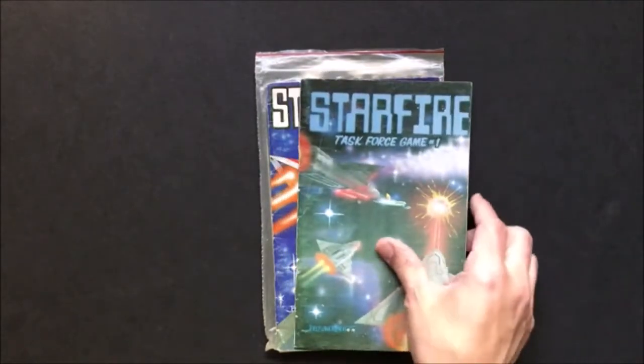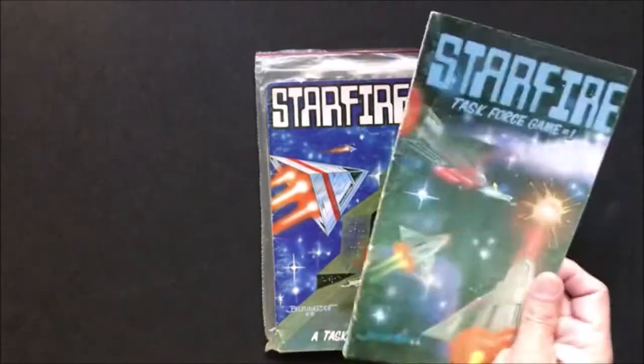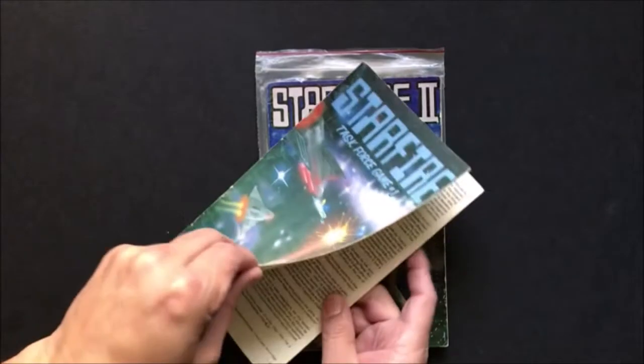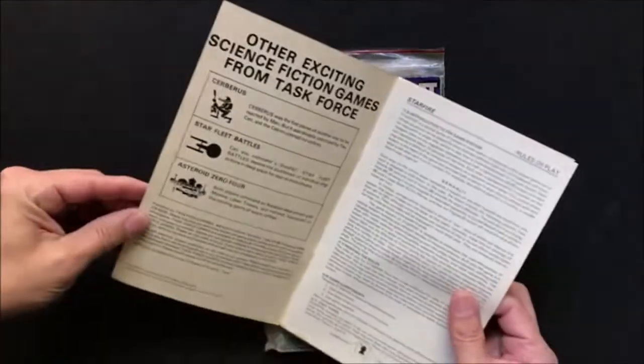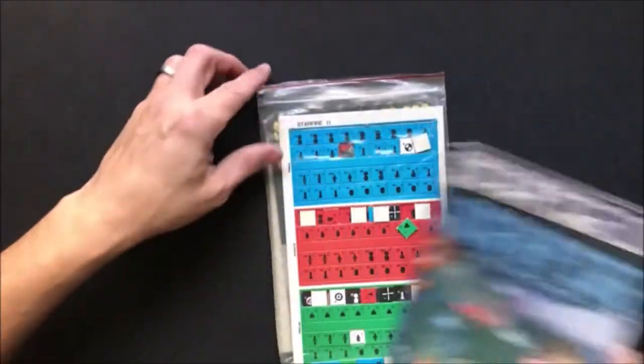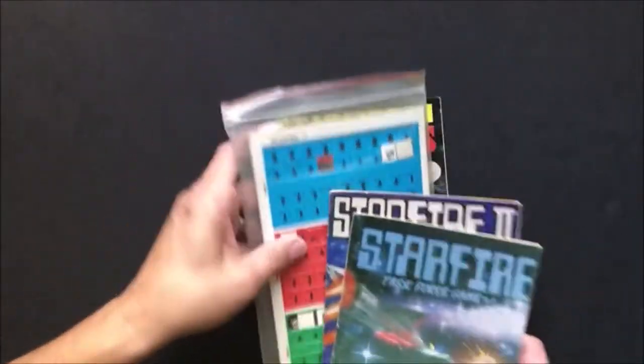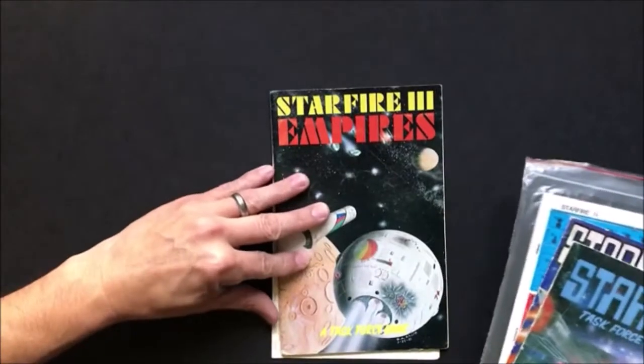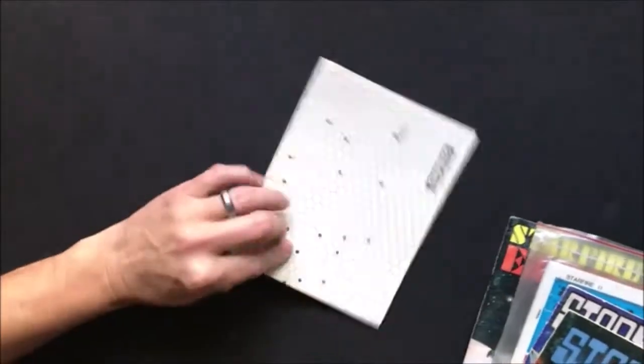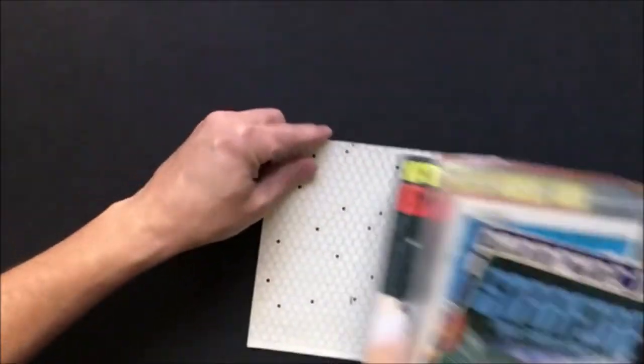This is from 1979. We got Starfire, Starfire Two with some counters here, and Starfire Three Empires with a map for empires.